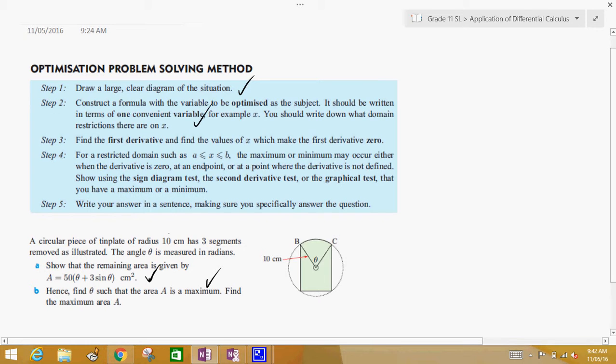Step three, find the first derivative. For this question, I'll just do it on the side, area is equal to 50 theta plus 150 sine theta. And therefore, find the first derivative. Let's call it A prime is equal to, this is 50 theta, so the derivative of 50 theta is 50. It's kind of like 50x. The derivative of 50x is 50. And the derivative of 150 sine x is 150 cosine, not x, but theta.